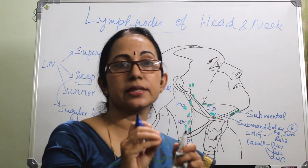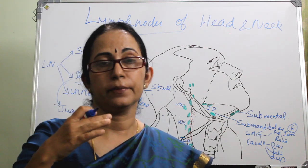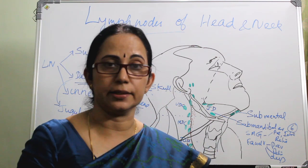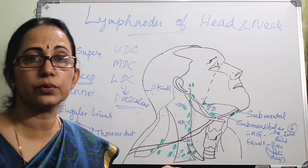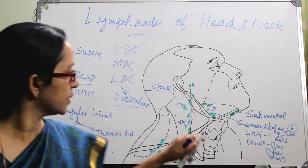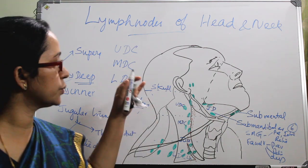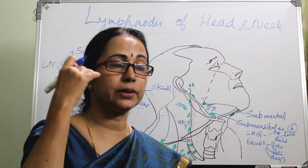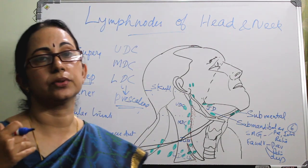The lower deep cervical nodes are actually a junction between the mediastinal nodes, the axillary nodes, and the neck nodes. That is why in some cases, without involvement of the neck region, you can see enlargement of these lymph nodes, because the lower deep cervical nodes receive confluent drainage from the mediastinum and also from the axillary area.